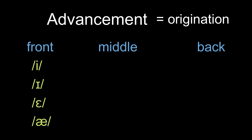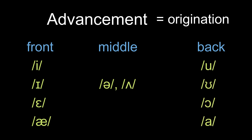Vowel sounds that originate in the center of the mouth are UH and UH. Vowels that occur at the back of the mouth are the following four: U, UH, AW, and AH. These are called the back vowels.